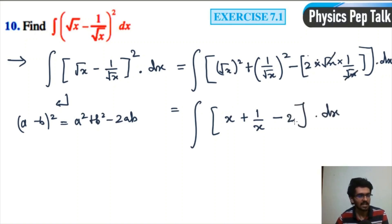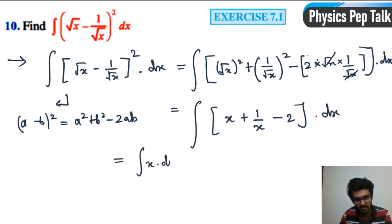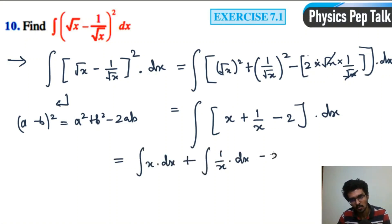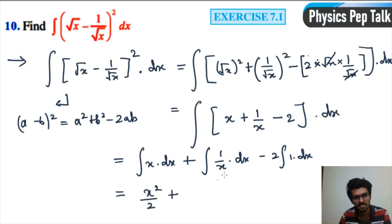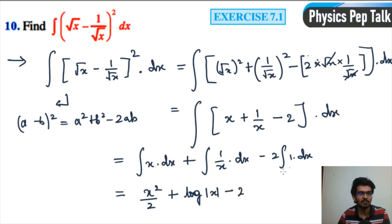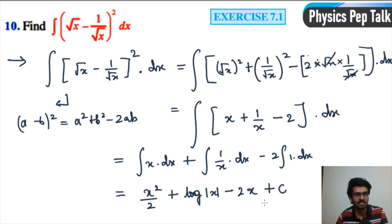This is equal to the integral of x with respect to x, which is x squared divided by 2, plus the integral of 1 divided by x with respect to x, which is log of mod x, minus 2 times the integral of 1 dx, which is x. Whenever you do integration, you have to put the integral constant c. This is the required answer.